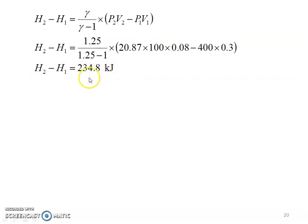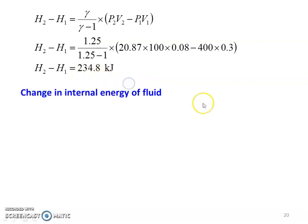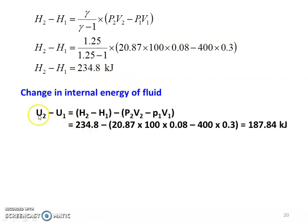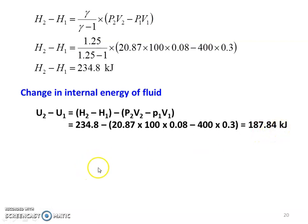This is a compression process, so the enthalpy change is 234.8 kJ. Change in internal energy: U2 − U1 = (H2 − H1) − (P2V2 − P1V1) = 234.8 − [(20.87 × 100 × 0.08) − (400 × 0.3)] = 187.84 kJ. So the change in internal energy is 187.84 kJ.